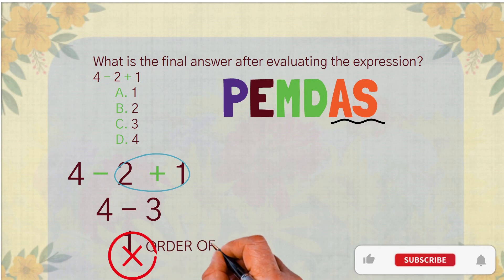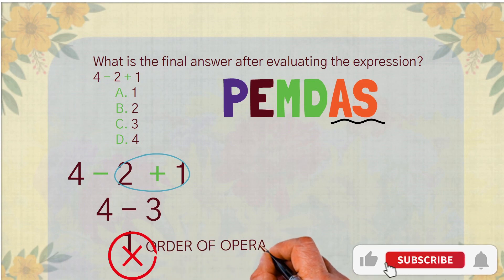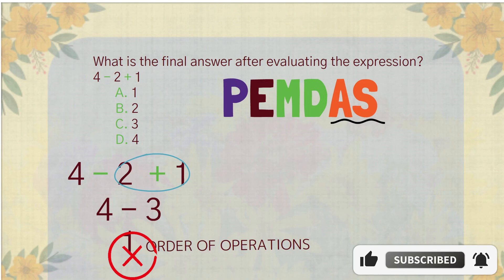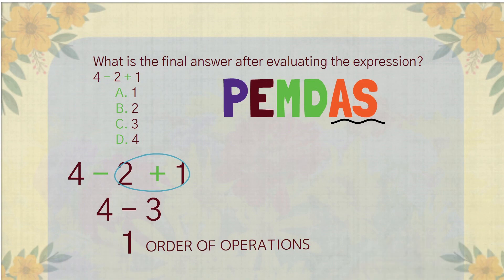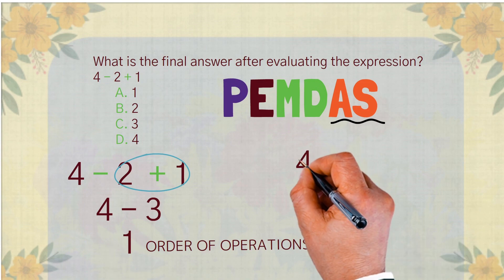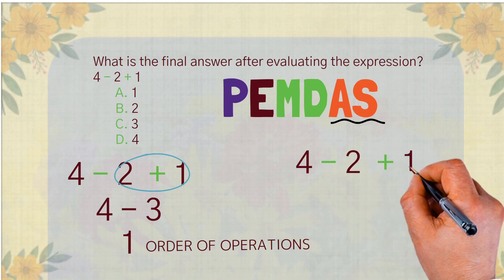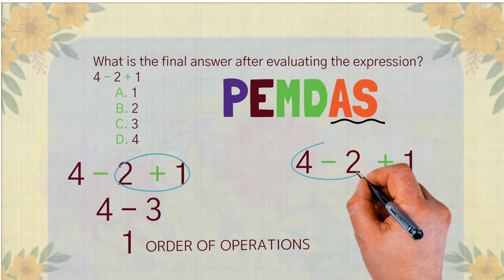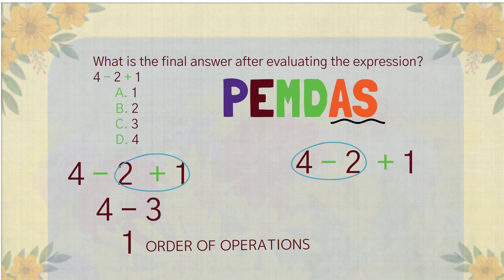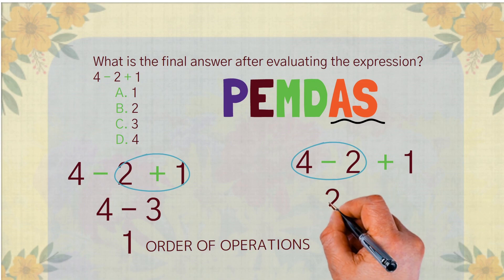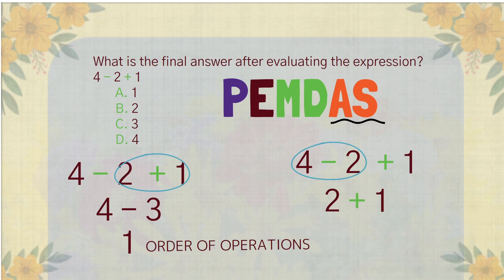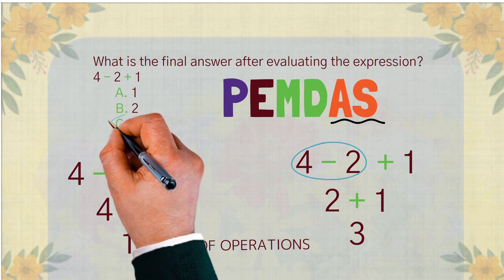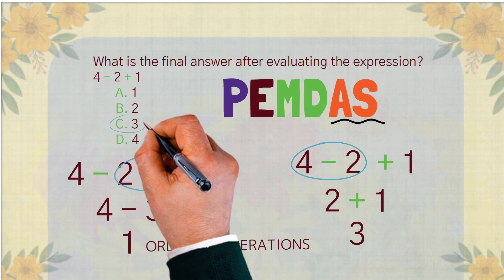The order of operations says that addition and subtraction must be handled from left to right, no matter how they appear in PEMDAS. Let's solve it correctly step by step. The expression is 4 minus 2 plus 1. First, subtract: 4 minus 2 gives us 2. Now the expression becomes 2 plus 1. Next, we add: 2 plus 1 equals 3. So the correct answer is C, 3.